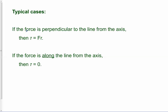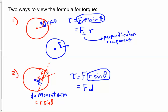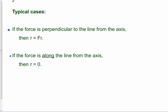To be clear: if your force is perpendicular to the line from the axis, sine θ = 1 and torque is simply force times R. If your force is along the line from the axis, sine θ = 0 and there is no torque. A lot of times in problems it's one of these two extremes, but if the force is at some odd angle you do have to account for sine θ.